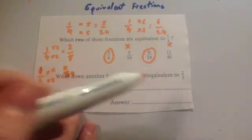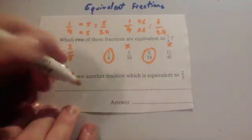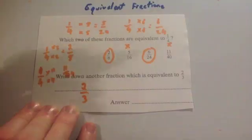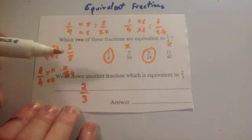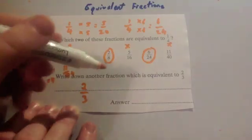Write down another fraction which is equivalent to 2 thirds. So 2 thirds. Well really, as long as you times the top line and the bottom line by the same number you'll get an equivalent fraction. You could double them and get 4 over 6. You could times by 10.